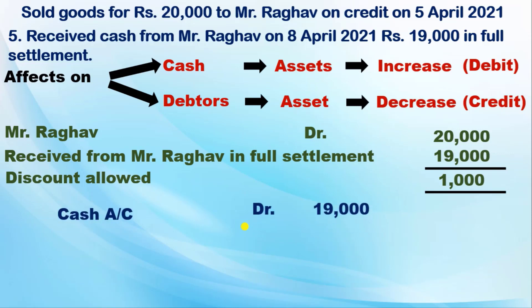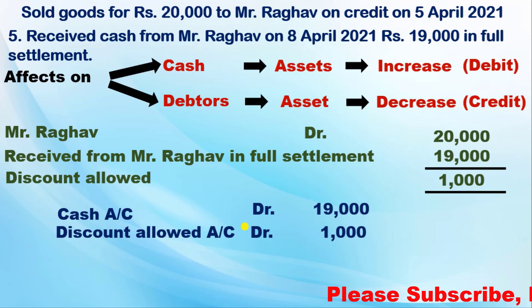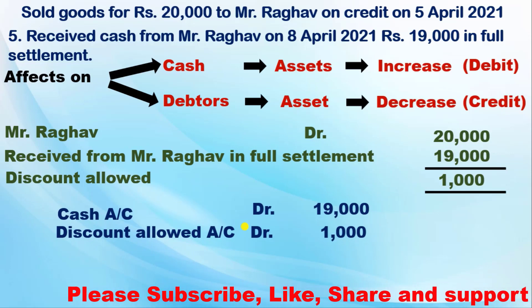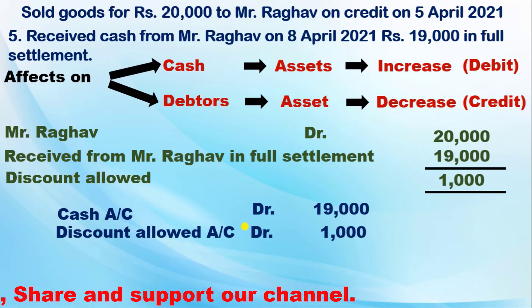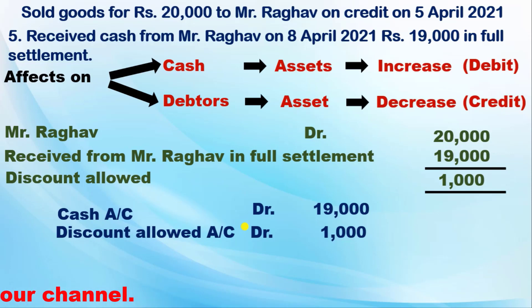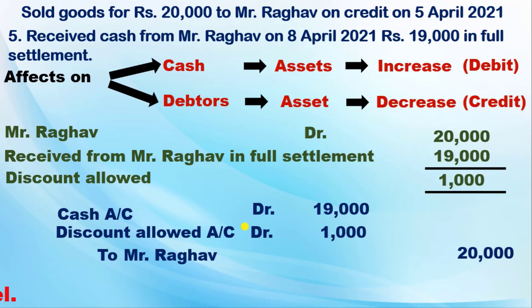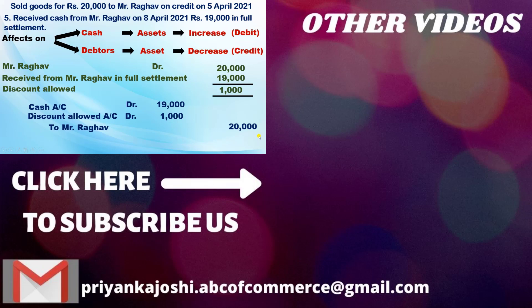If there is no full settlement mentioned, the transaction changes — you would not debit the discount allowed account, and you would credit Mr. Raghav for only 19,000. So when the full settlement clause appears, you must handle it this way. For today's video, we will next meet with some advanced journal entries. Thank you.